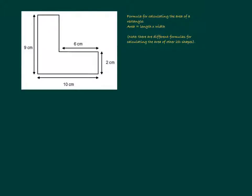So if I split the rectangles as indicated by the dotted line there, I can now use the formula area equals length times width to calculate the area of this bottom rectangle. So I have a length of 10 cm and a width of 2 cm. 10 cm multiplied by 2 cm equals 20 cm².